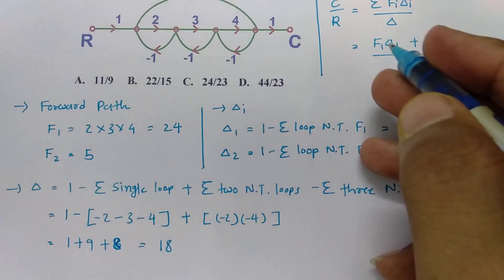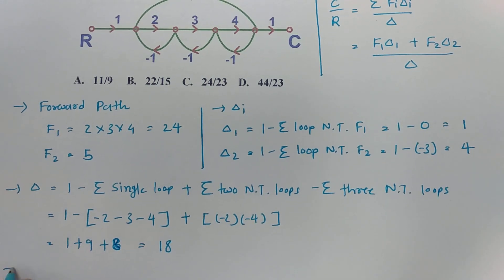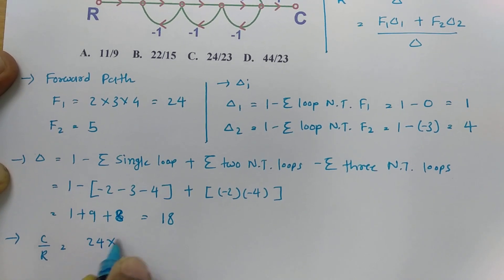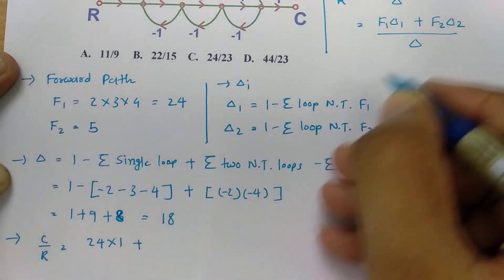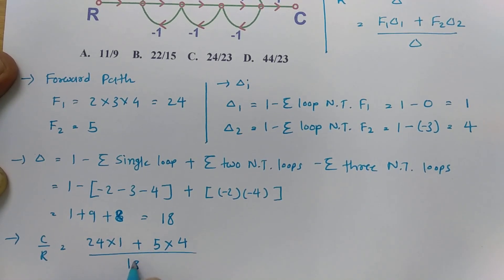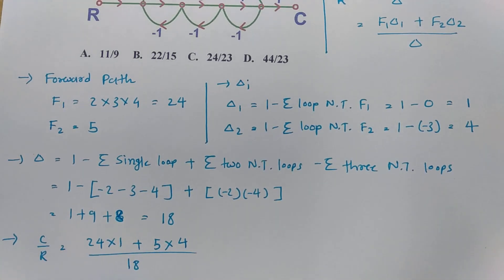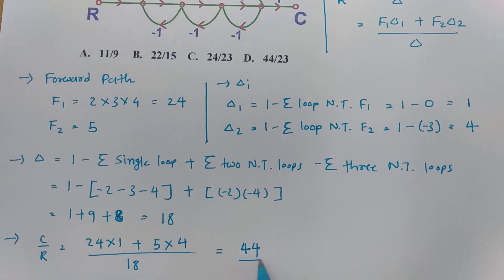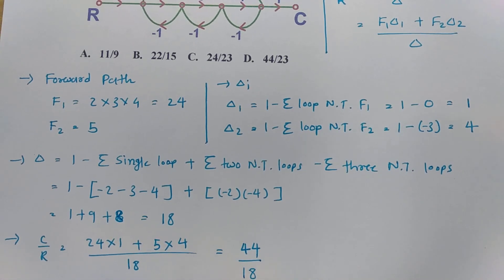Now applying this to the basic formula: C by R equals F1 times delta1 plus F2 times delta2, divided by delta. That is 24 into 1 plus 5 into 4, divided by 18. This gives 24 plus 20 equals 44, divided by 18. However, I think I have made a mistake here — let me check again.